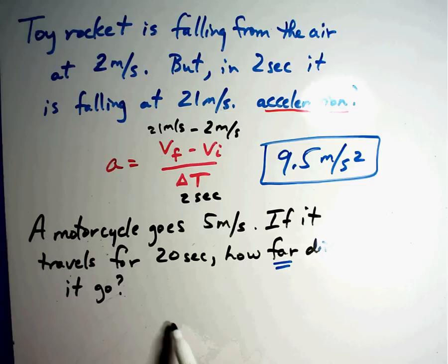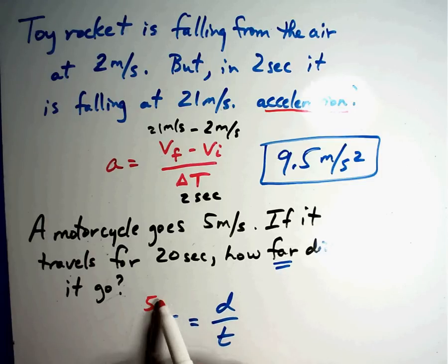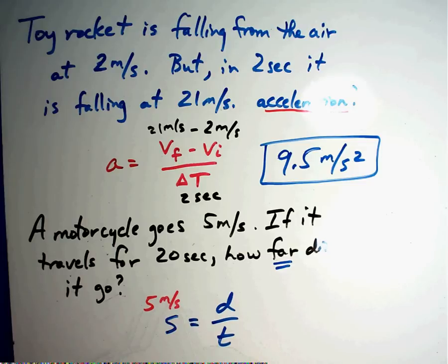A motorcycle goes 5 meters per second. Well, that's its speed. If it travels for 20 seconds, that's time. What is its distance? Put that over 1. That makes my life easier. Cross multiply.